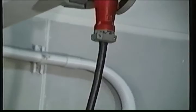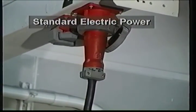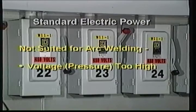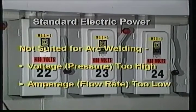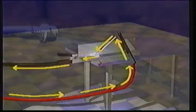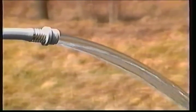Many electric arc welders use an alternating current AC industrial power source. But standard electrical power is not suitable for arc welding — its voltage, or pressure, is too high, while its amperage, or flow rate, is too low. So arc welding needs a larger diameter hose operating at relatively low pressure, and electricity must flow smoothly into the welding process like water flowing steadily from a hose.